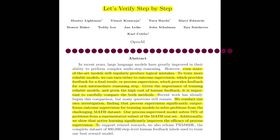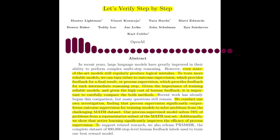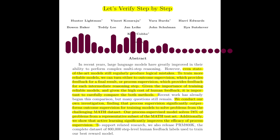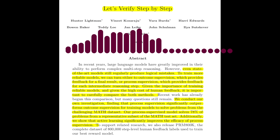The paper also discusses the potential for test-set contamination. The authors acknowledged the possibility that some math problems may have been present in the pre-training data. They attempted to remove such problems from their dataset, but couldn't guarantee complete elimination. However, they observed no clear signs of memorization and found that the PRM consistently solved problems with low solve rates under the generator, suggesting that contamination did not significantly impact their results.